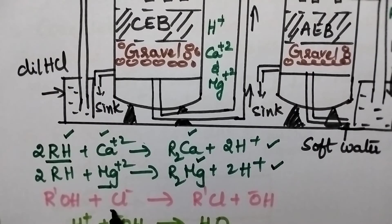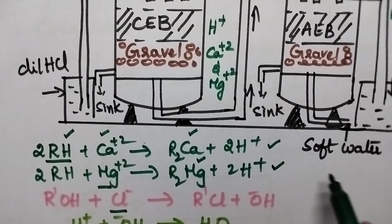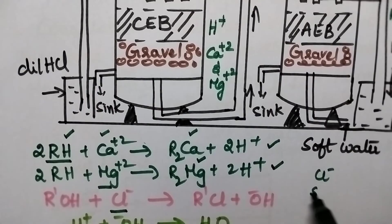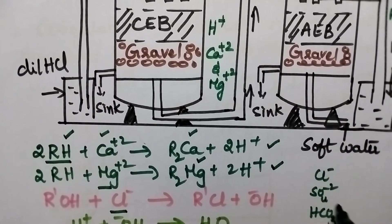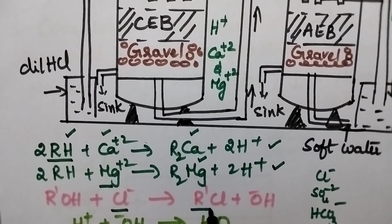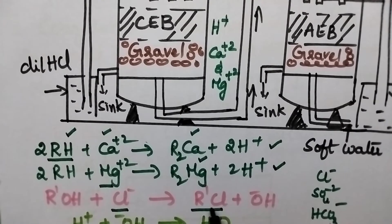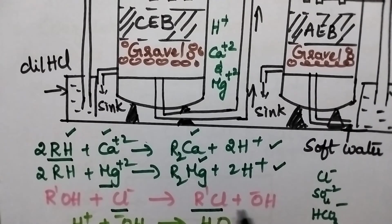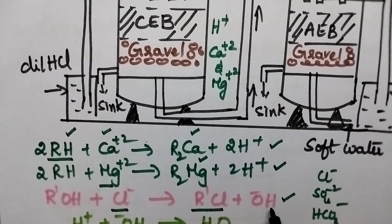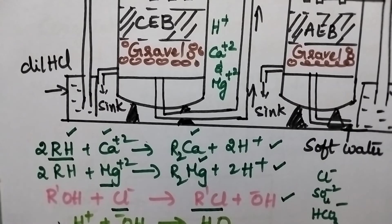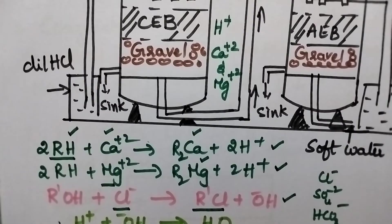Coming to the anion exchange bed, it replaces its OH- ions with hardness-producing anions such as chloride, sulfate, and bicarbonate. This results in the formation of chloride resin along with the formation of OH- ions. Finally, the treated water contains H+ and OH- ions.